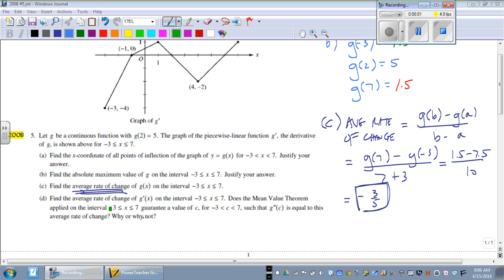For part D, find the average rate of change of the derivative of G of X on the interval from negative 3 to 7. Does the mean value theorem applied on the interval from negative 3 to 7 guarantee a value of C between negative 3 and 7 such that the second derivative is equal to this average rate of change? Why or why not?